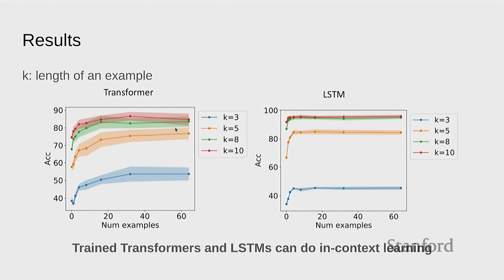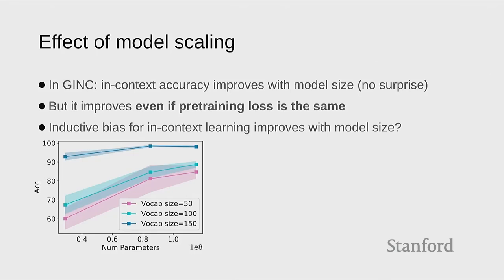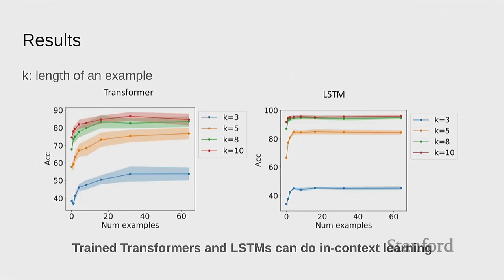The LSTMs doing better might be natural because this dataset is basically like a mixture of HMMs — it has this temporal structure that maybe matches the inductive bias of LSTMs better than transformers. On the effect of model scale: the common refrain is that when models get bigger, things get better. One interesting thing is that the in-context accuracy gets better as you increase model size from, say, 12 to 16 layers — but the validation loss or pre-training loss is the same. So you're not fitting the data better with a larger model. We don't really understand why this is the case, but maybe there's an inductive bias for in-context learning that improves with model size.